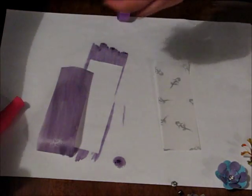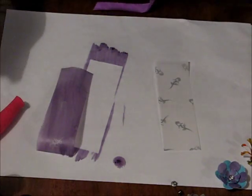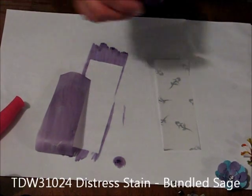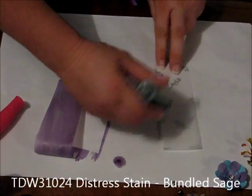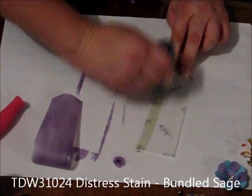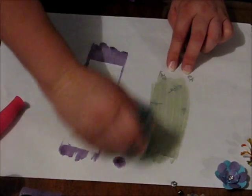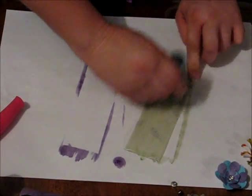And the other colour that I'm going to use is Bundled Sage. So again, rubbing it over. Now the paper will curl up, as you can see that purple one there is deciding to go for a bit of a wander. And that's perfectly normal, they do that.